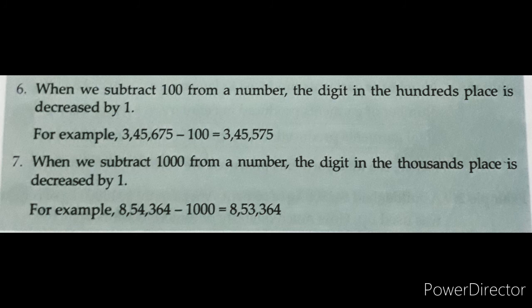Number 7. When we subtract 1000 from a number, the digit in the thousands place is decreased by 1. Just as the hundreds place decreased by 1, similarly when we subtract 1000 from any digit, 1 digit is reduced from the thousands place. For example, 8,54,364 − 1000 = 8,53,364.